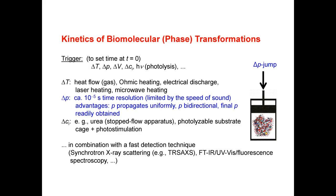For kinetic measurements, in chemical kinetics you typically do a temperature jump with a laser system, a photochemical reaction, or change concentration — for example, adding urea to unfold a protein. But you can also do a pressure jump. This is limited by the speed of sound, so we are limited to microseconds, but this is already quite fast. Pressure has advantages over temperature jump: it propagates uniformly and bi-directionally — you can increase or decrease the pressure — and the final pressure is readily obtained. You couple this with a fast detection technique such as time-resolved small-angle scattering or fast spectroscopy.